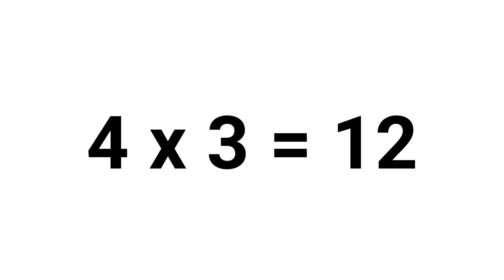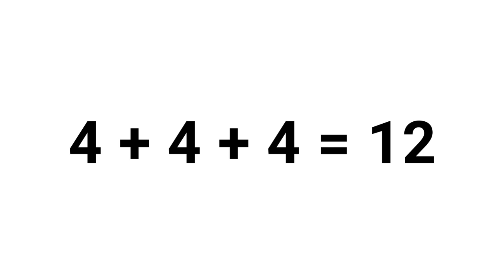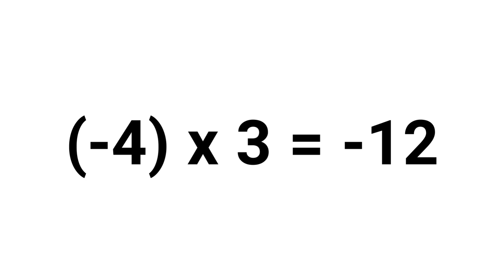Let's take this second rule. Minus 4 multiply by 3 equals minus 12. You have to add the number minus 4 three times to get minus 12. So minus 4 is the amount, and 3 is the number of times to be added.